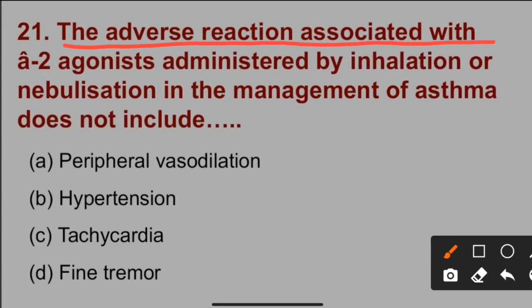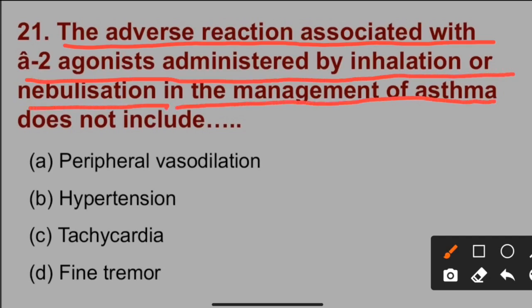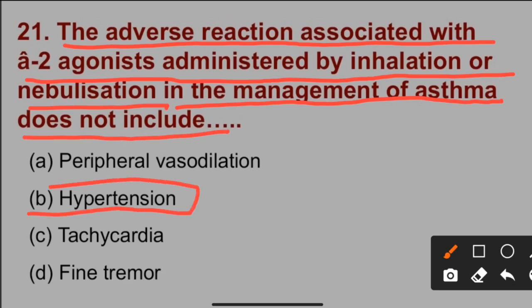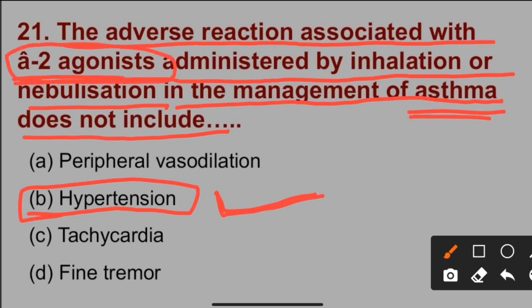Question number 21: The adverse reaction associated with alpha-2 agonists administered by inhalation or nebulization in the management of asthma does not include hypertension. Hypertension is the correct option because it does not occur with administration of alpha-2 agonists in asthma patients.